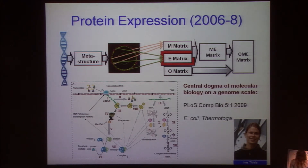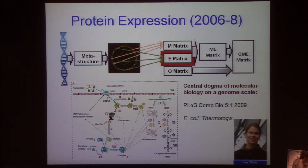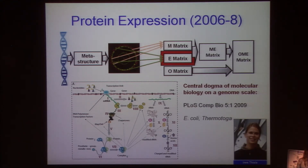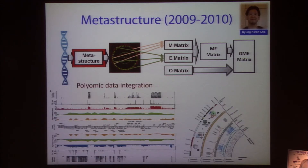It turns out that building the entire protein synthesis machinery of a cell is not easy. In E. coli, this relies on 423 genes or so, and Ines Thiele, who was a student here in bioinformatics, built this matrix and this model and published it in 2009.